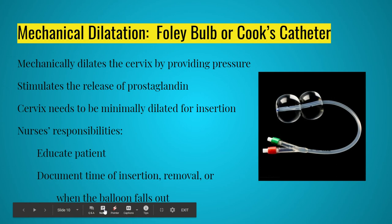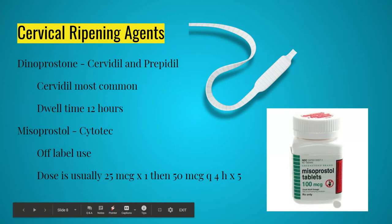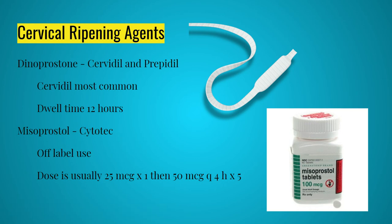An important note about cervical ripening agents: because they use prostaglandins to soften the cervix, they absolutely must not be used in anyone who has had a previous C-section. They soften the lower uterine segment to the point where scar tissue can loosen and cause uterine rupture — a life-threatening emergency for both patients. The decision of which agent to use depends on the cervical exam results via a Bishop score, which determines how favorable the cervix is.